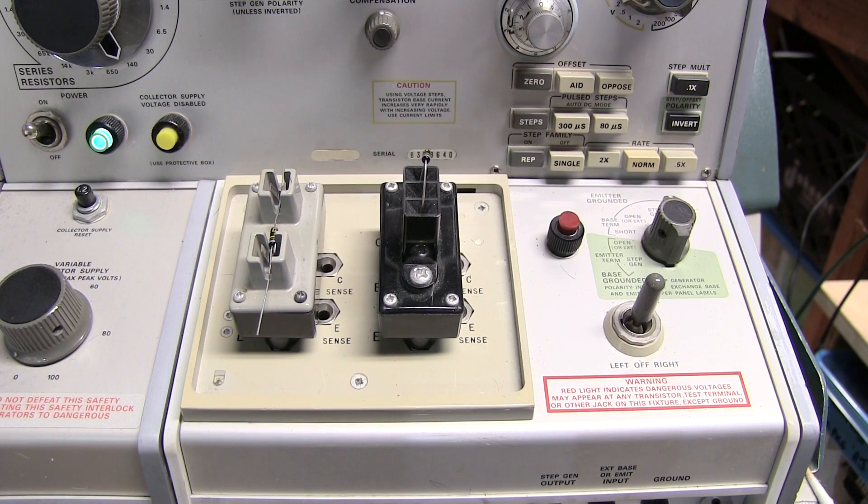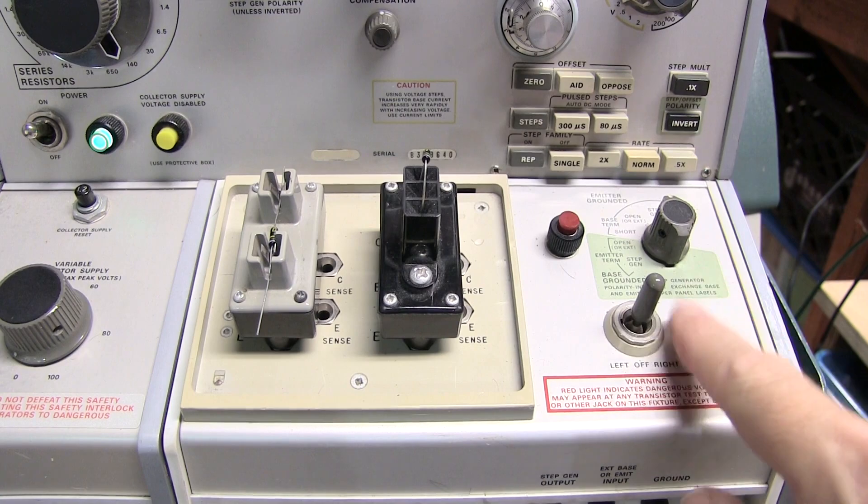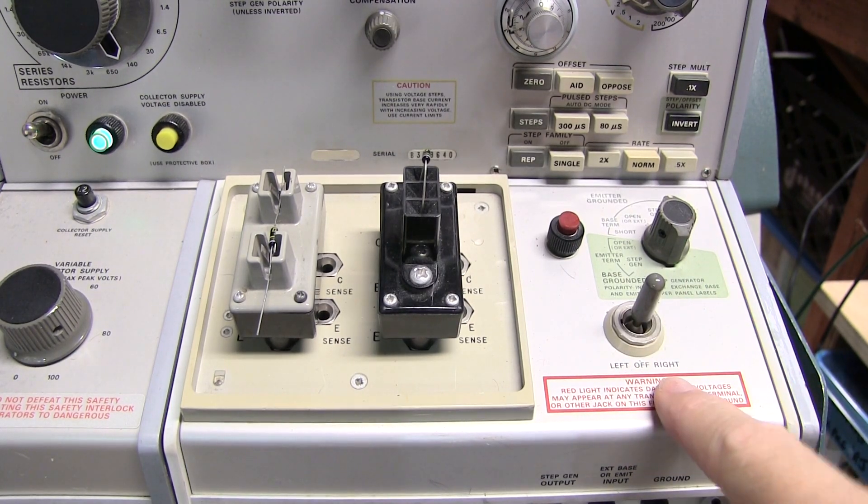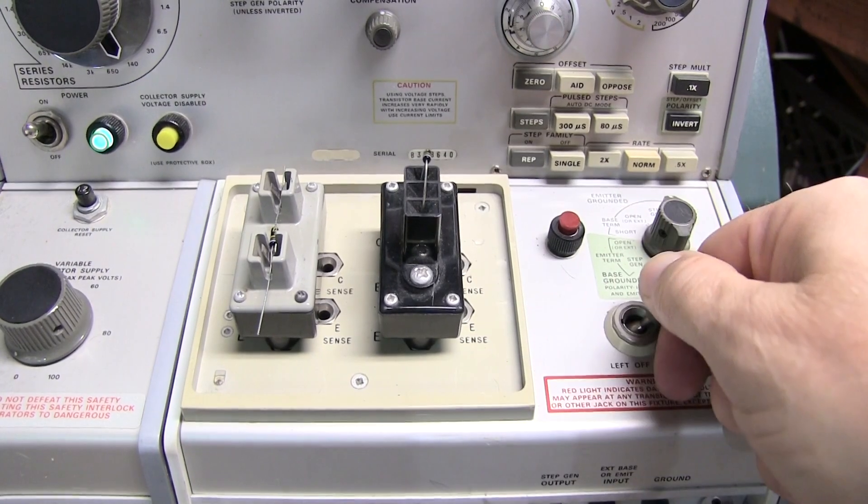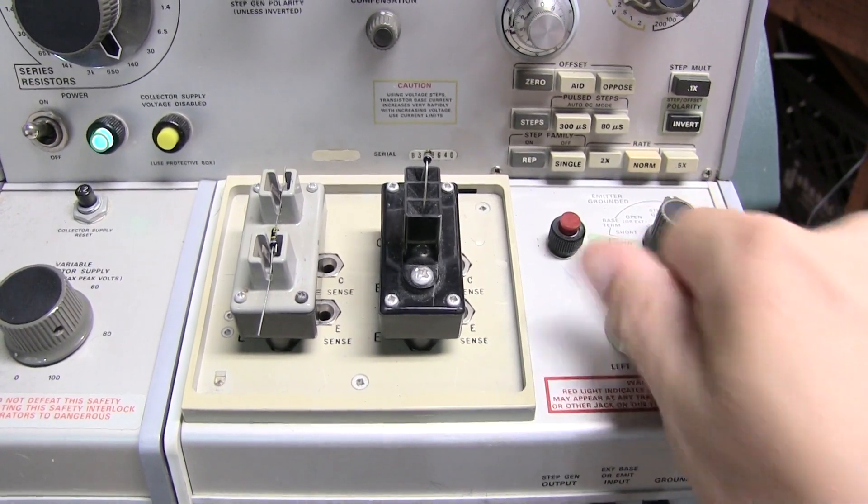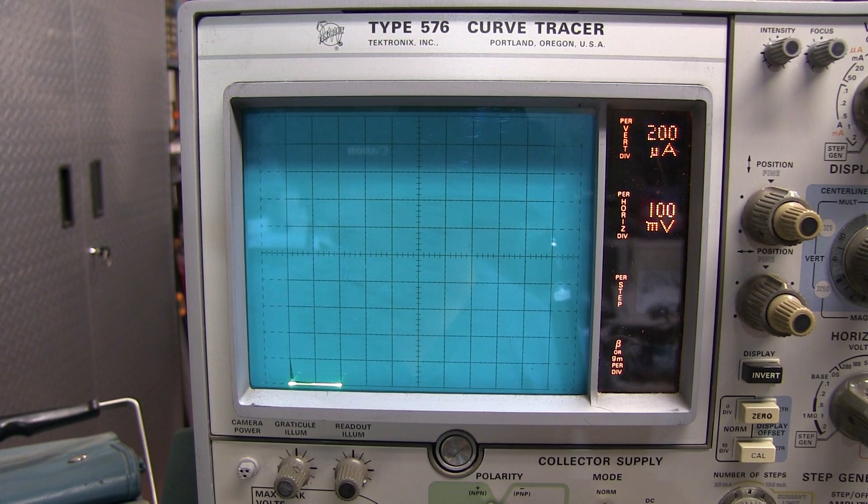Old curve tracers like this TEC 576 often have two test sockets, and a switch that allows you to switch between left and right, so you can very quickly switch between two different devices and compare the curves visually on the screen. Let's take a look at the two diodes that we used at the beginning of the video with the simple DMM diode check. These diodes came out of a bag that was labeled with the same lot, but had very different results in the diode check.